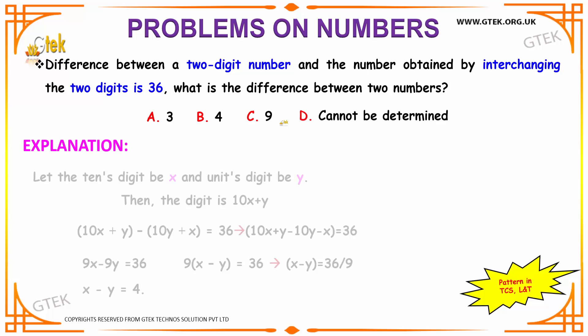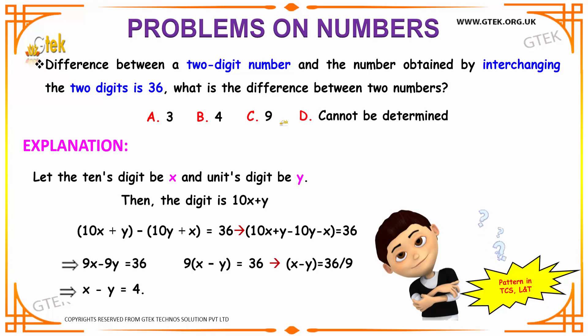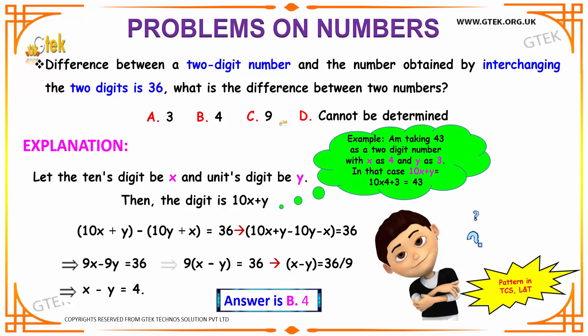Here we have the difference between a two digit number and the number obtained by interchanging the two digits is 36. So what will be the difference between two numbers?